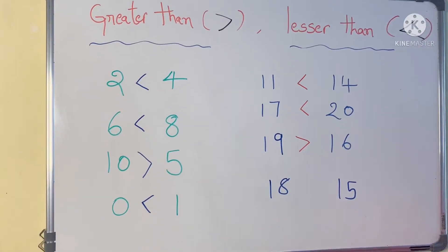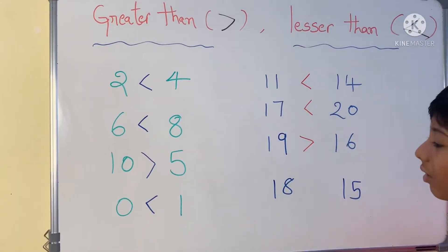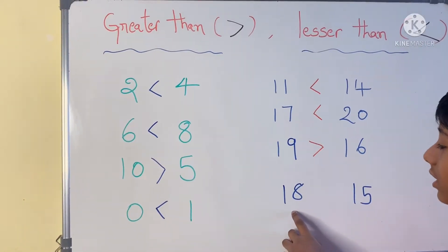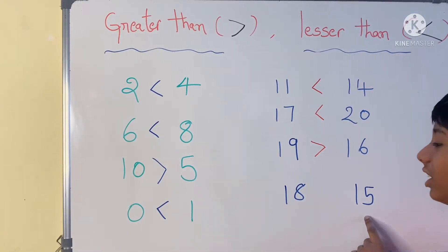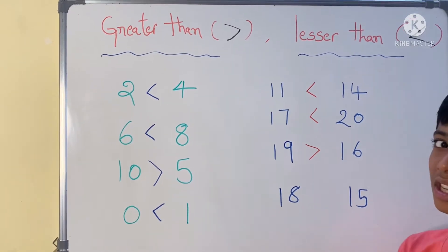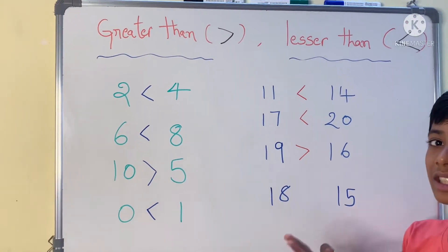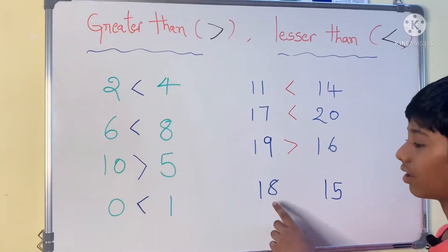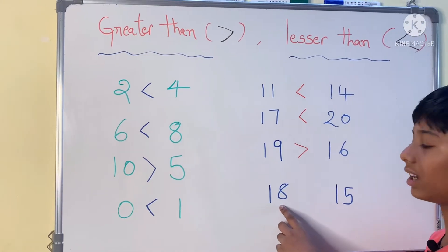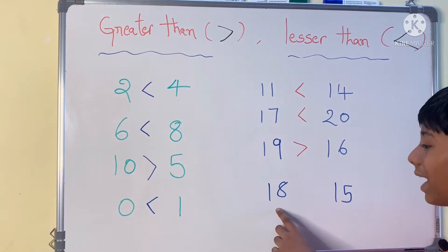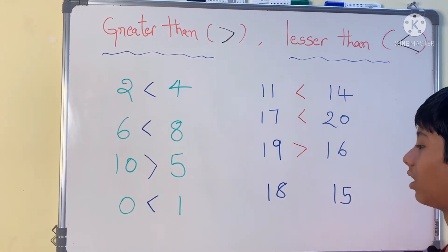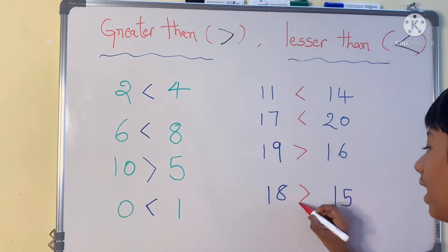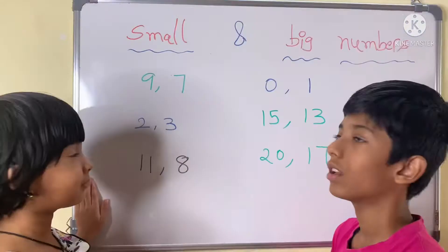Now eighteen and fifteen: which is big and which is small? Eighteen is big and fifteen is small. So eighteen is greater than fifteen.